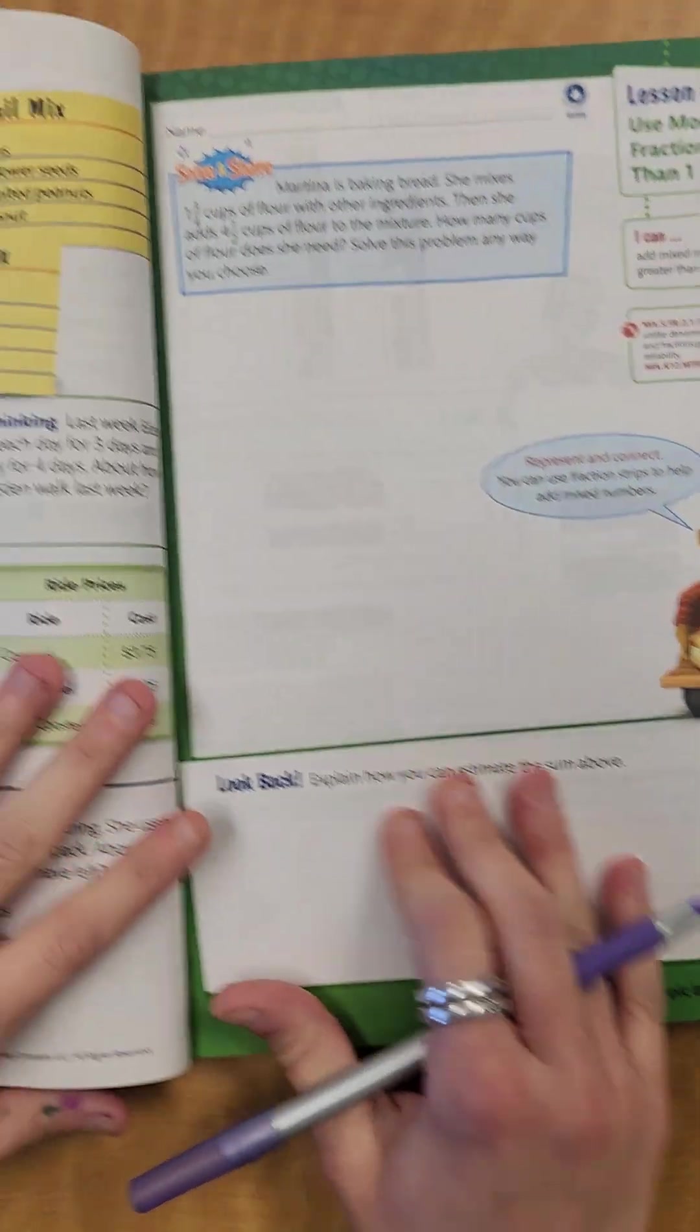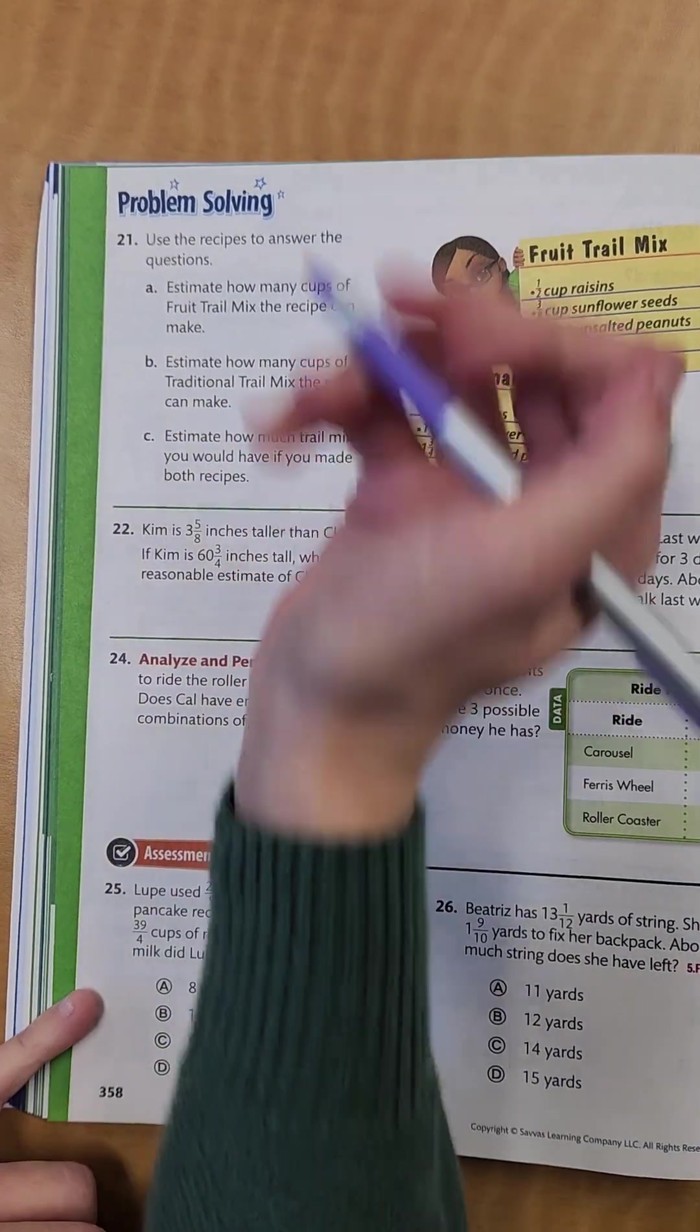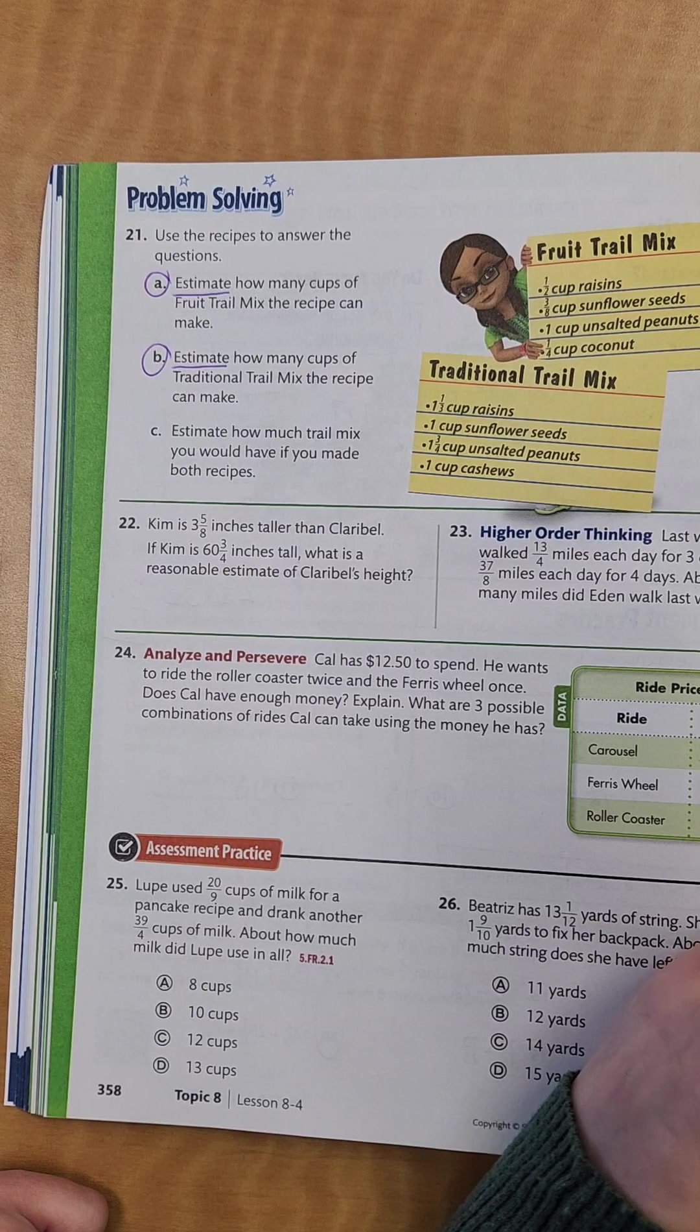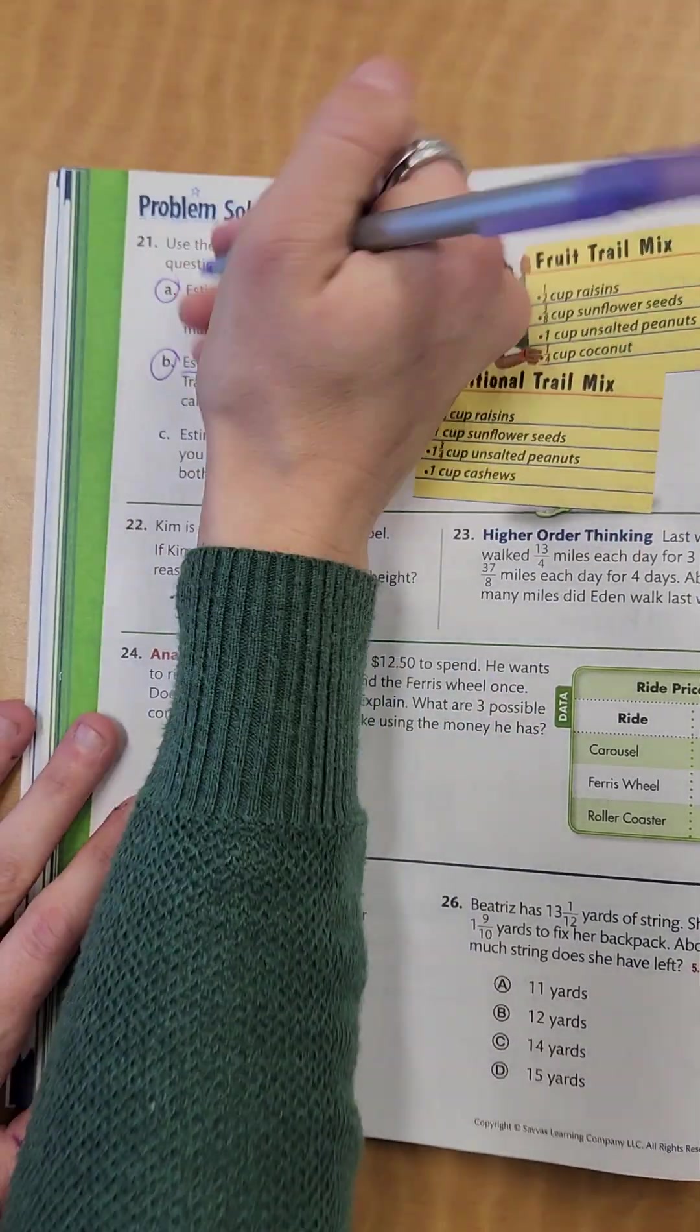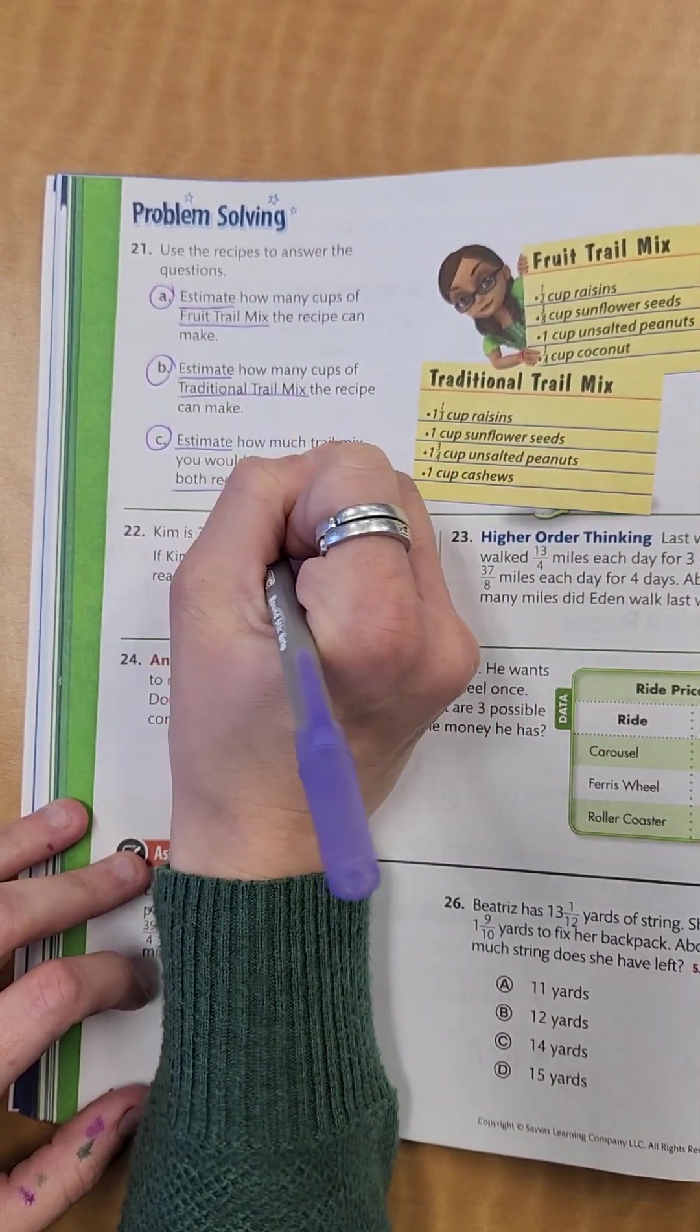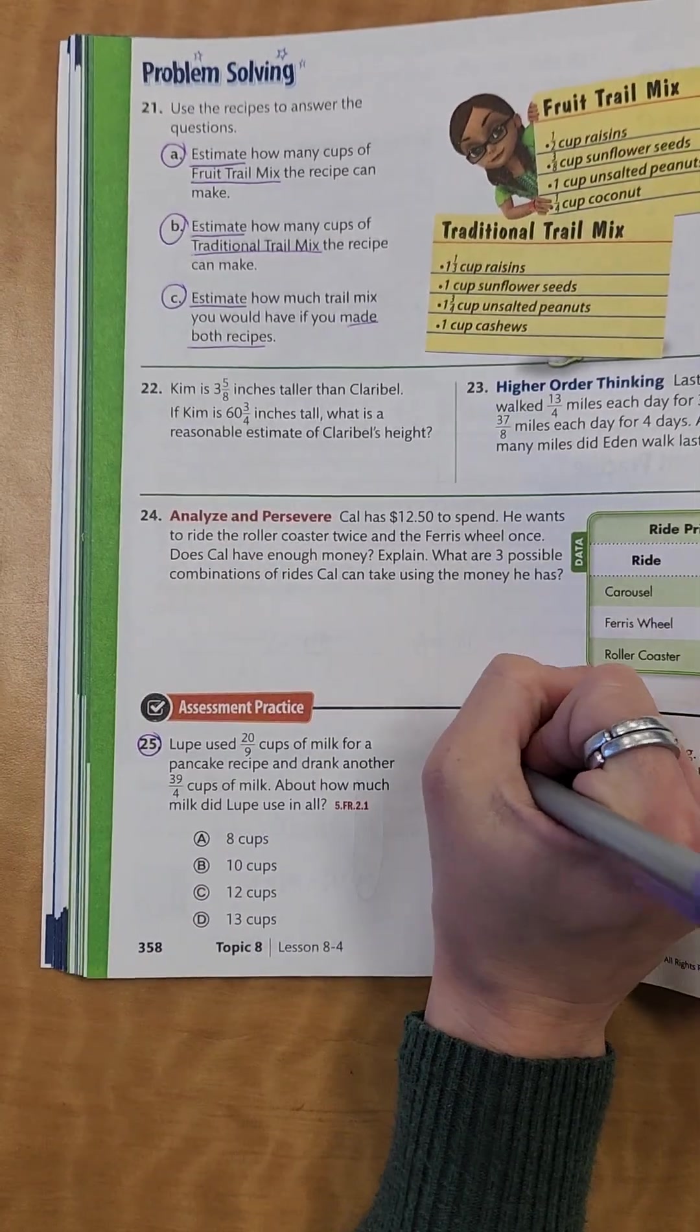Now, let's flip it over to the back and look at some of these problems on the back. This one, it says, using the recipes to answer the questions. You're going to estimate how many cups of fruit trail mix the recipe can make. So let's go ahead. Remember, it says estimate. It's not an exact amount. They just want you to estimate it. I want you to do part A. I want you to do part B. Again, you're estimating how many cups of trail mix the recipe can make, traditional. So this one's the fruit trail mix, and this one's the traditional trail mix. So make sure you know the difference between the two of them. There's two different recipes. And then the last one, estimate how much trail mix if you made both recipes. So that one, you have to figure out about how much for each of those and then add it up. And then I also want you to go down to the bottom and do 25 and 26.